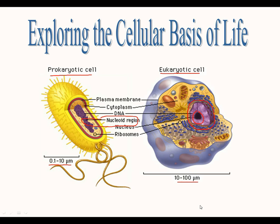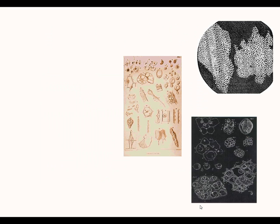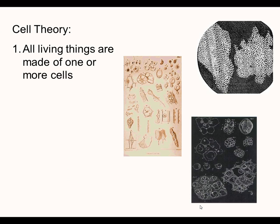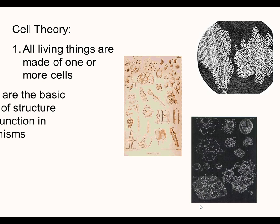Moving on to the cell theory — there are three basic parts you should know. The first part states that all living things are made up of one or more cells. So anything that's living has at least one cell, and that single-celled organism, like a prokaryotic cell, can carry out all life functions. When we're talking about multicellular organisms, they work in conjunction with each other in order to accomplish certain tasks.